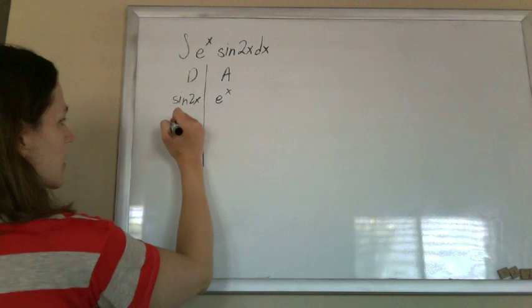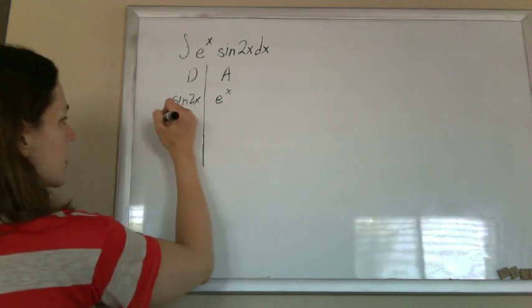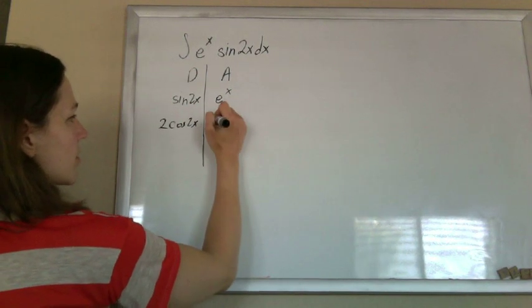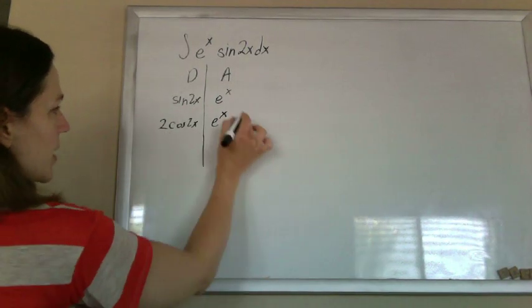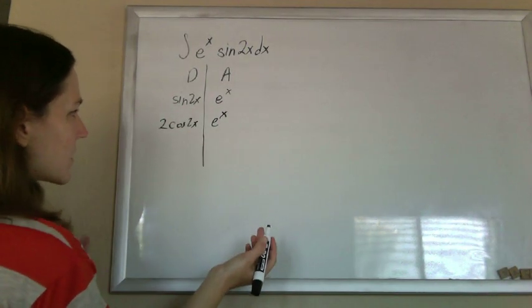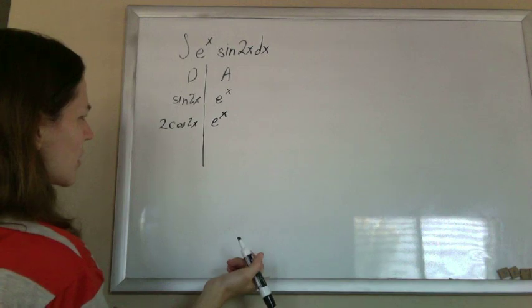So, derivative of sine 2x is cosine 2x times 2. Anti-derivative of e to the x is just e to the x. You examine that bottom rung and you're like, well, that doesn't look much better. I'll keep going.